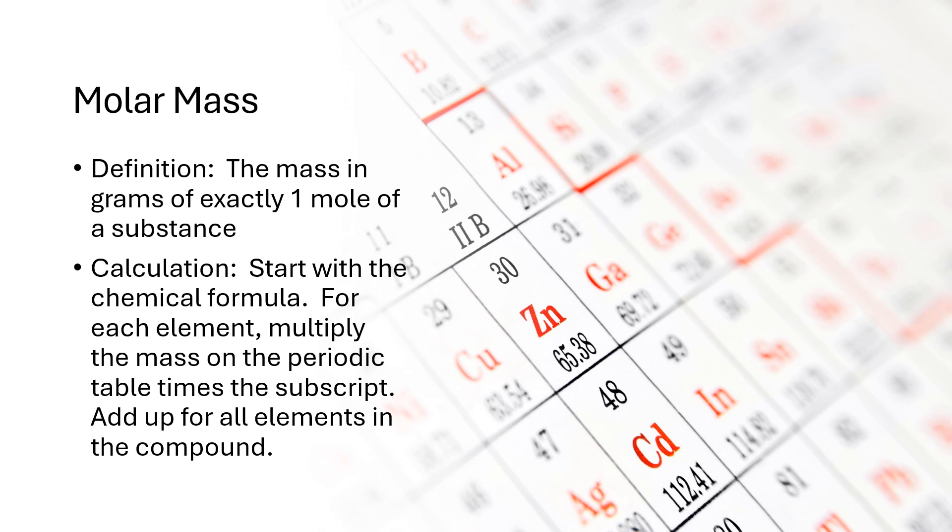So for the molar mass, what we want to find is the mass of a single mole. And we're going to be using the mass that's listed on the periodic table. It's going to be the number that has decimal points following it, not the whole number. And it takes a lot more effort to say in words what we're doing than to show you. So I'm going to move on to the next slide and show you on the next slide how we're going to do this calculation.